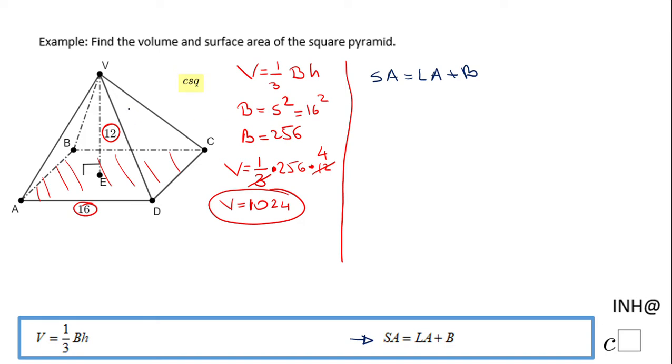And in this case, the lateral area, if you take a look, it has four triangles: VDC, VBC, the one back VBA, the one on the left, and VAD, the one up front. And those four triangles are congruent—they are the same—so if we find one, then we can multiply by 4.